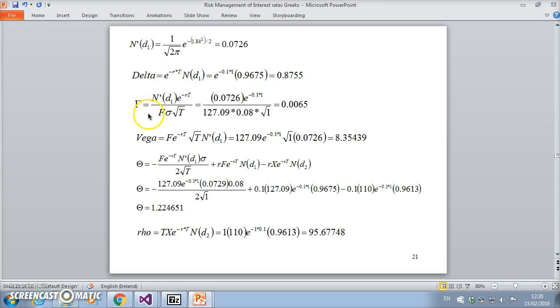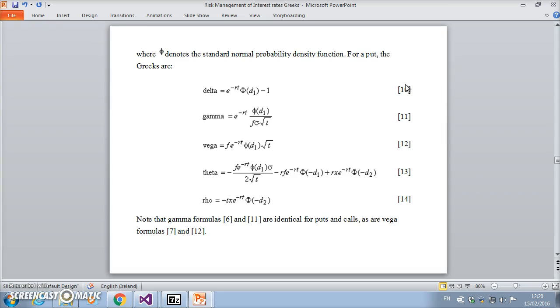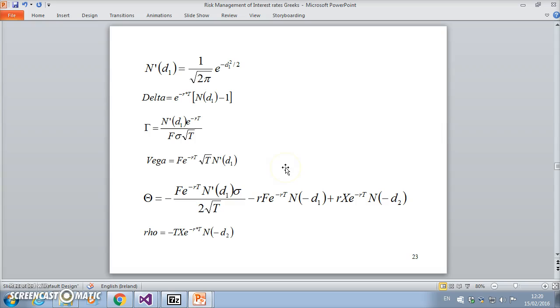For the parameter inputs of F, K, r, T, sigma, we have these estimates for the delta call, gamma call, vega call, theta call, and rho estimate for the call. Likewise for the put option, using the notation before and then just translating it into the notation that I started out with, we have a similar set of option Greeks.